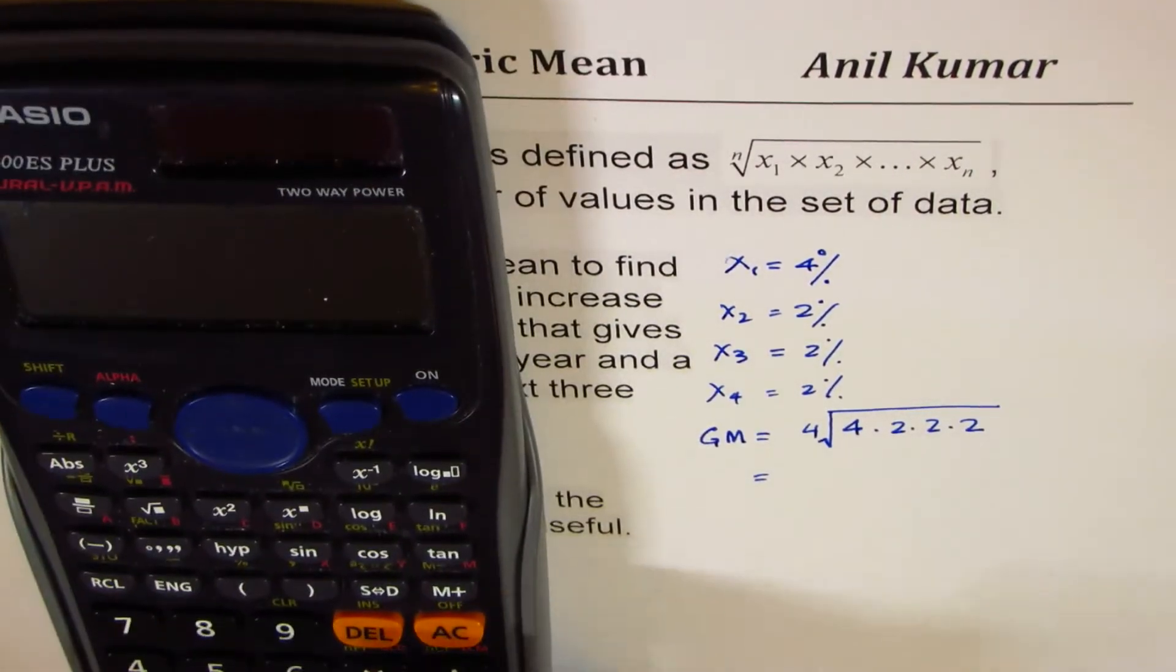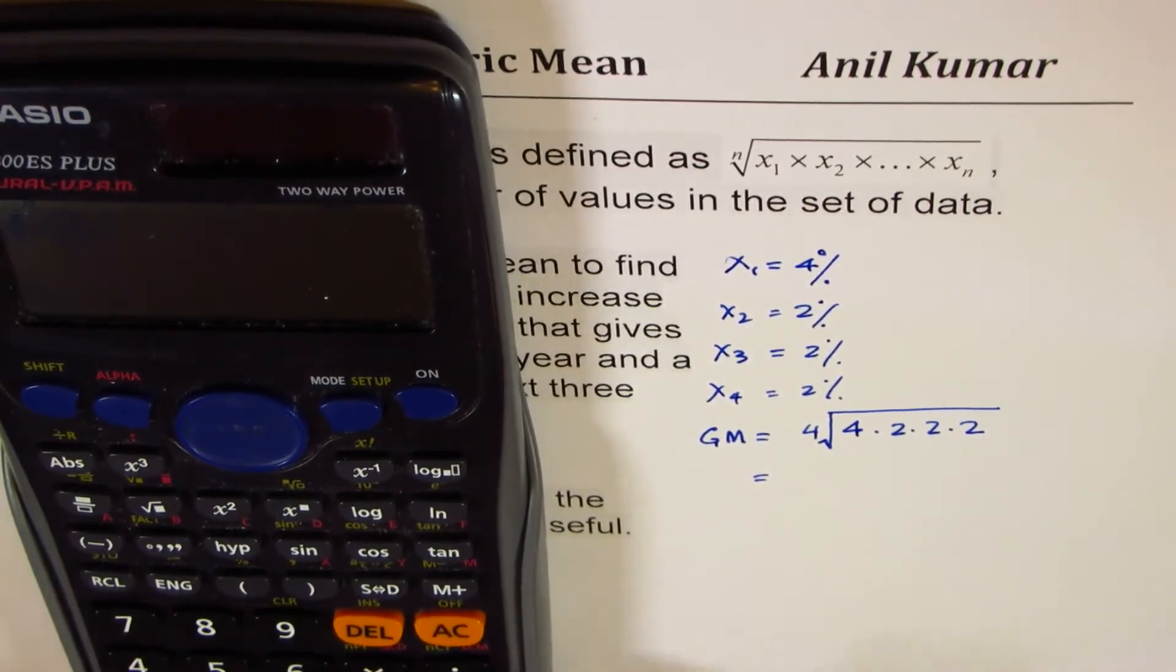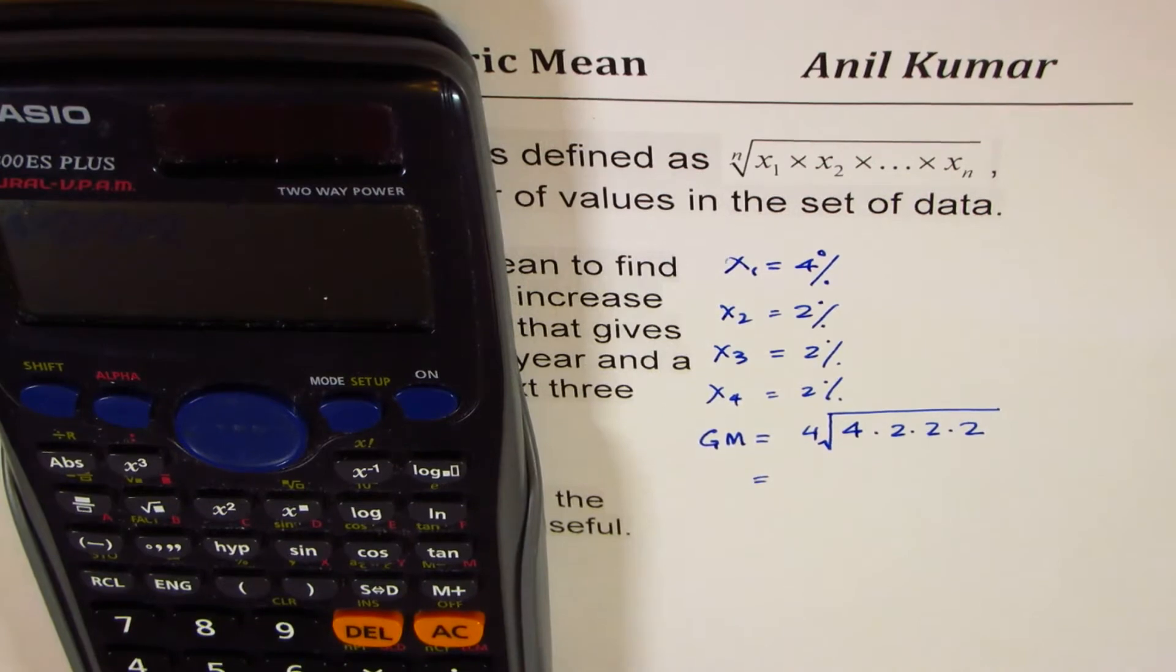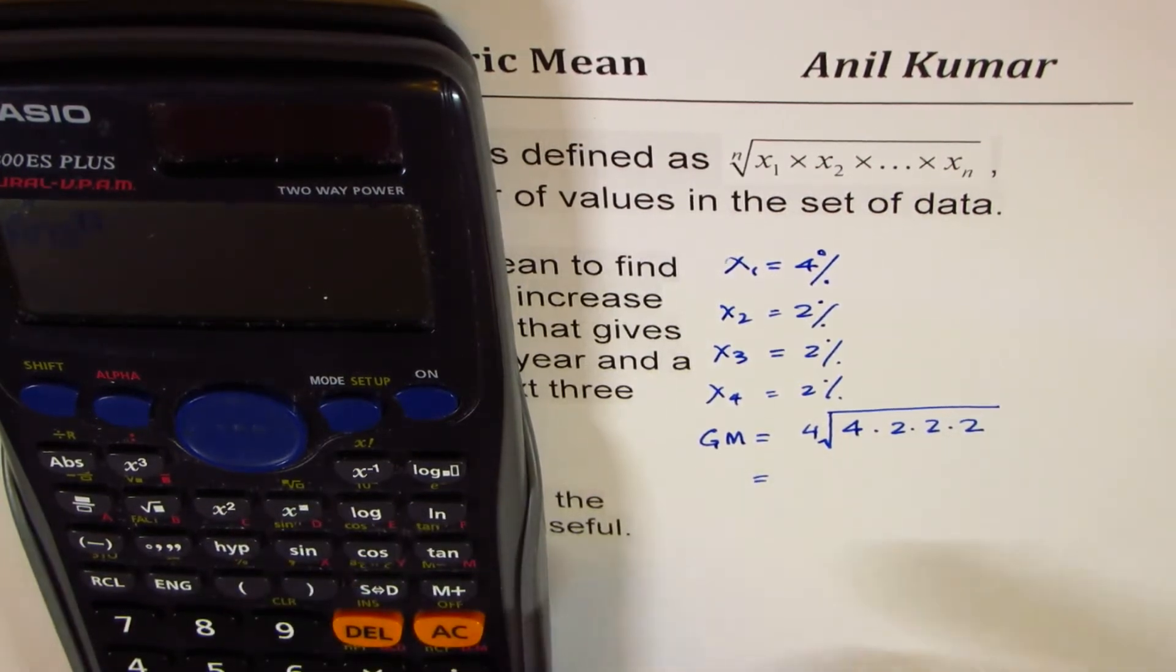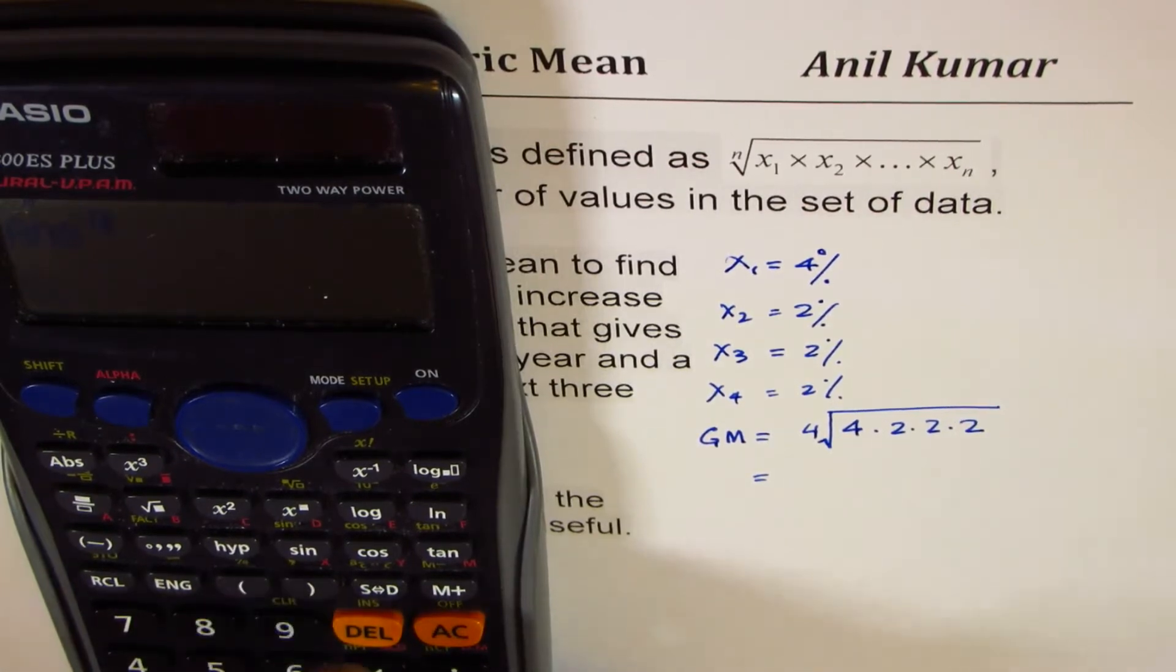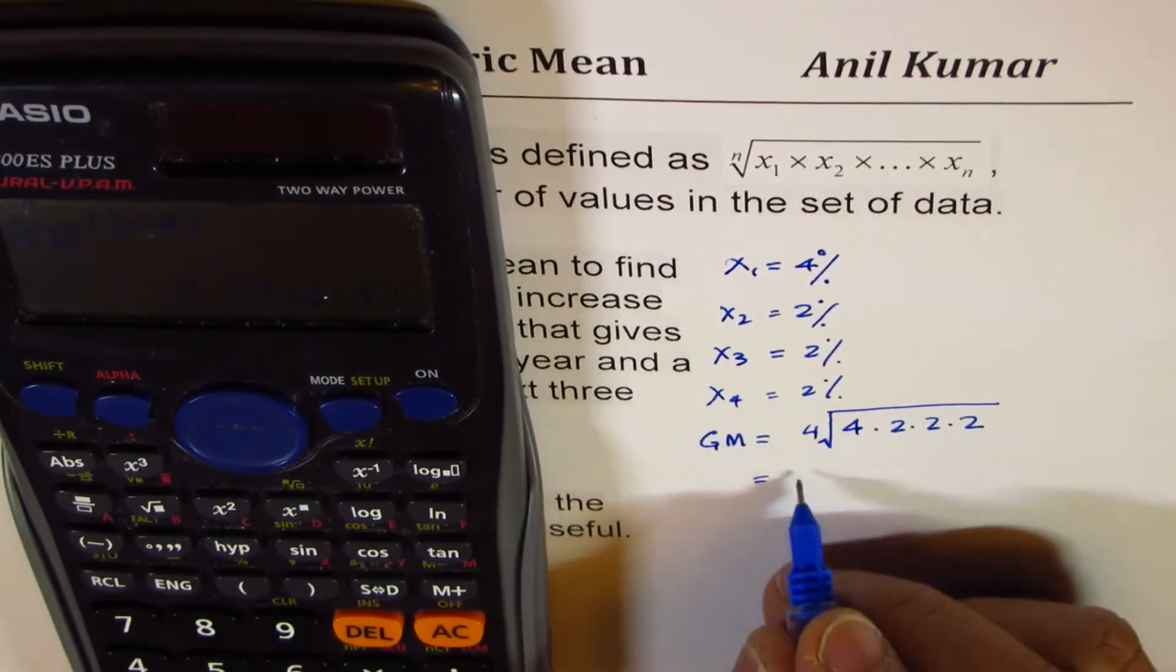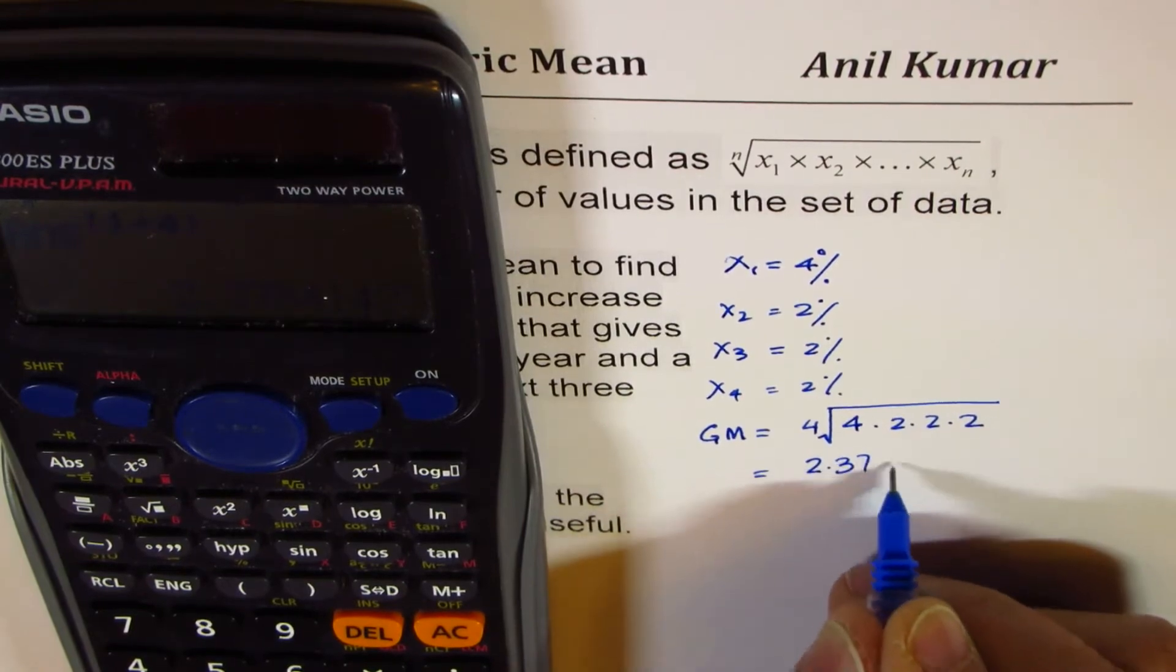So which is, we can say 4 times 2 times 2 times 2 is equal to 32. 32, and 32 to the power of 4th root means 1 divided by 4. So 1 divided by 4, so that is the 4th root, and this is equal to 2.378.